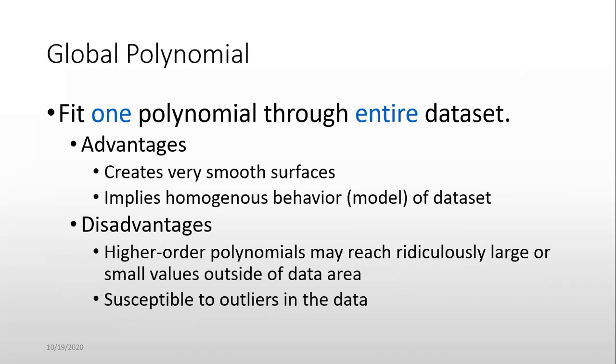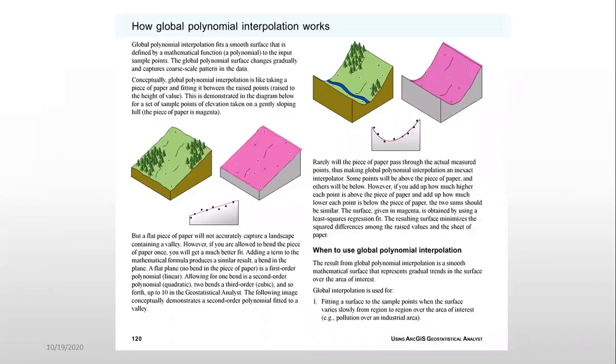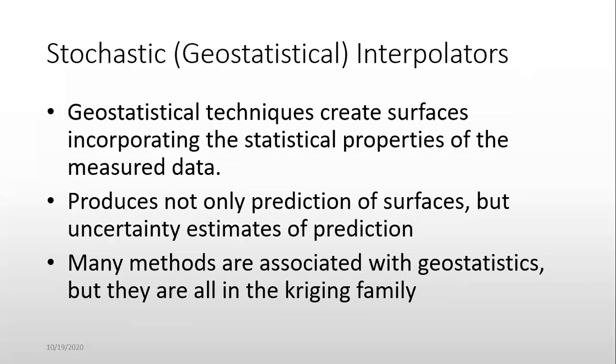Global polynomial: fit one polynomial through entire data set. Advantages: creates very smooth surface, implies homogeneous behavior model of data set. Disadvantages: higher order of polynomials may reach ridiculously large or small values outside the data area, susceptible to outliers in the data. These are the explanations. You have to read it.